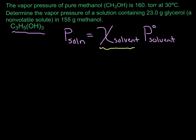Looking at our problem, the first line tells us that the vapor pressure of pure methanol is 160 torr at 30 degrees C. The temperature just gives us the specific vapor pressure we are looking at — if we lowered the temperature, the vapor pressure would be different. The bottom line is this is the vapor pressure for the pure solvent, so we have the vapor pressure for pure methanol.